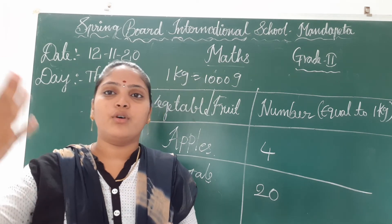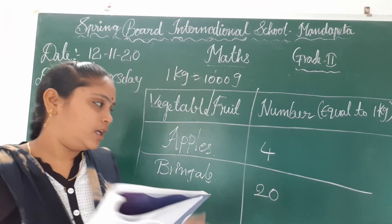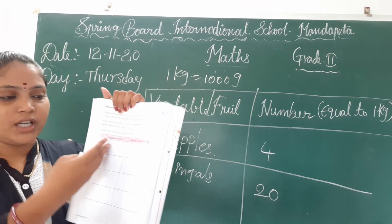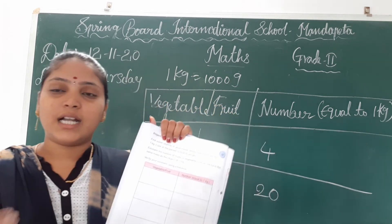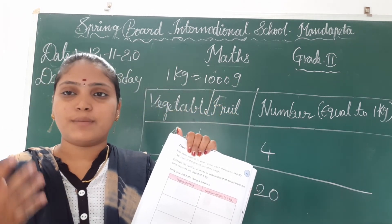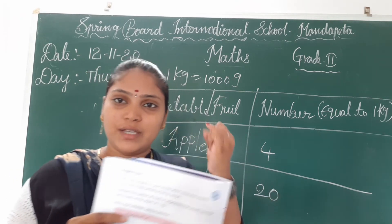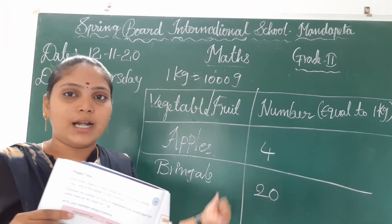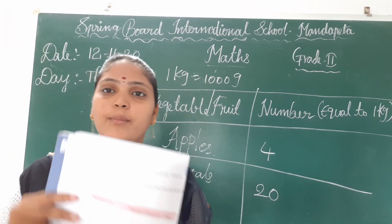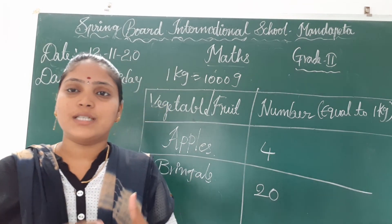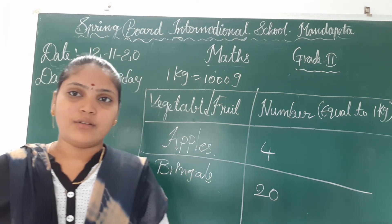Check if they are below a kilogram or more than a kilogram. This is your project. You have to take different fruits or vegetables — oranges, bananas, everything. First think how many fruits or vegetables make one kilogram, then verify your estimate. This is the project.